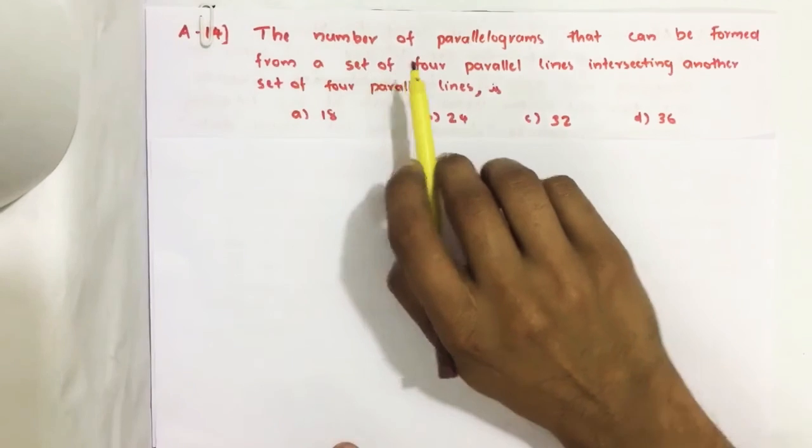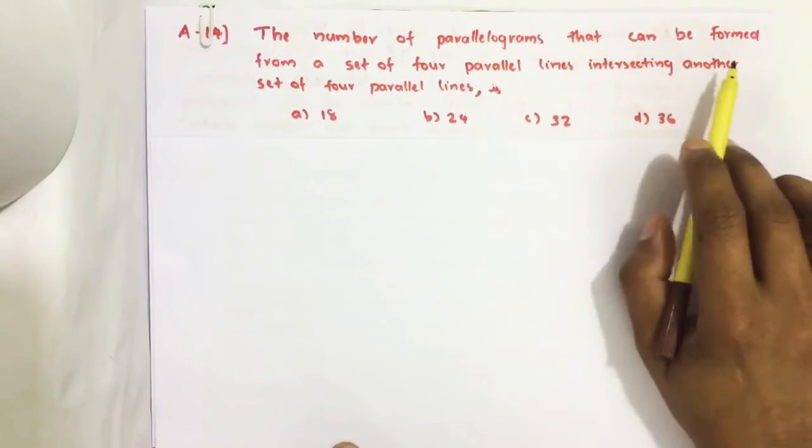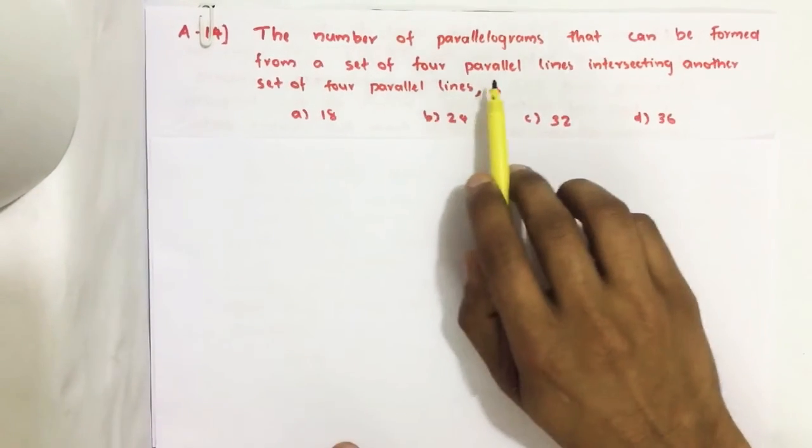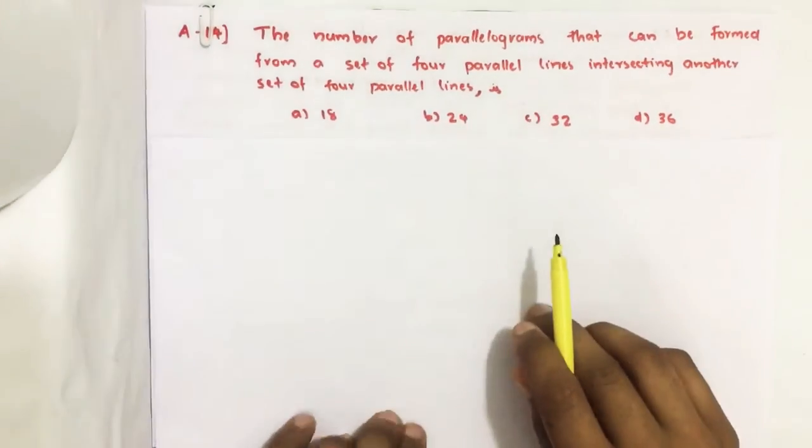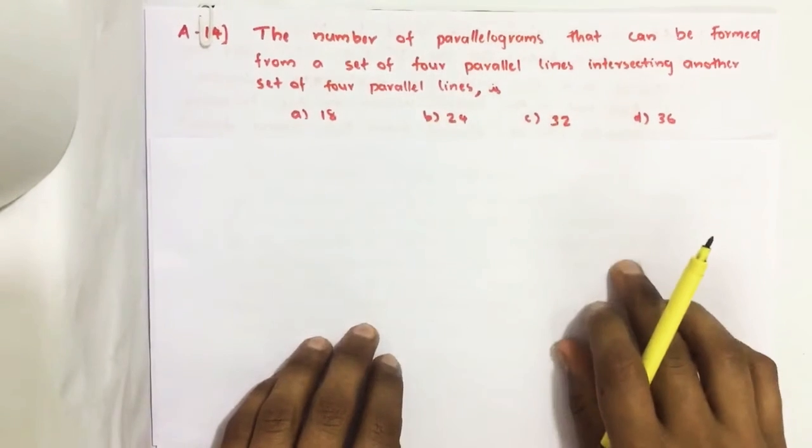The number of parallelograms that can be formed from a set of four parallel lines intersecting another set of four parallel lines. We have four options.